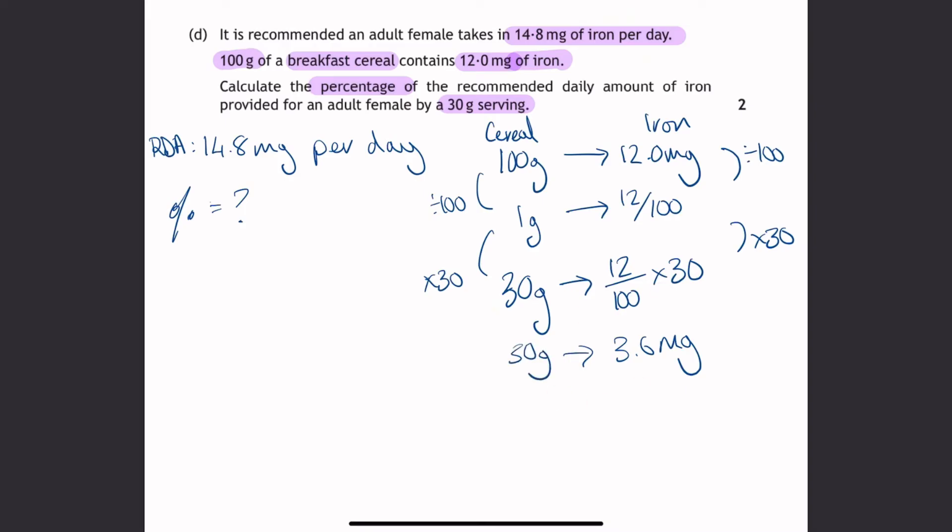We now need to work that out as a percentage of the recommended daily allowance. So a percentage is the mass you've got over the mass you need times by 100. So 3.6 over 14.8 times 100. A percentage is just a fraction out of 100. So 3.6 divided by 14.8 times 100 is 24.32%. You can round that up to 24, or 24.3. You can round it to how many decimal places you like as long as your rounding is correct.